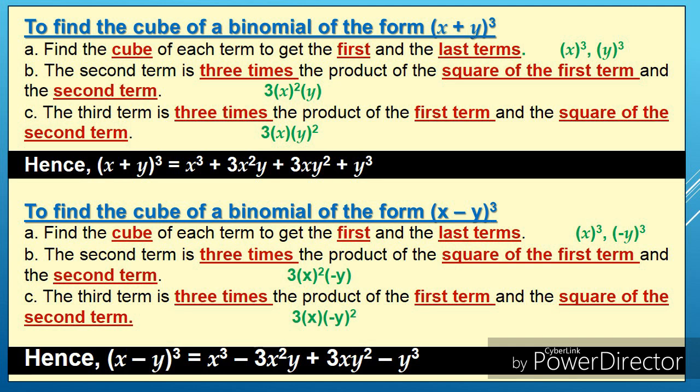To find the cube of a binomial of the form cube of x plus y: letter a, find the cube of each term to get the first and the last; letter b, the second term is three times the product of the square of the first term and the second term; letter c, the third term is three times the product of the first term and the square of the second term. Hence, we have x cube plus 3x squared y plus 3xy squared plus y cube.